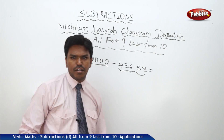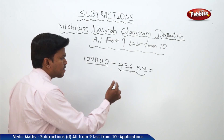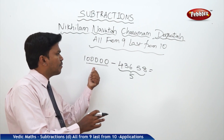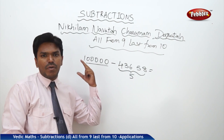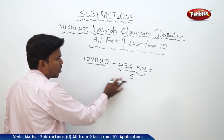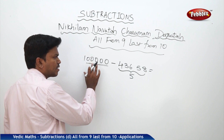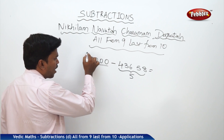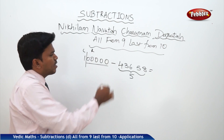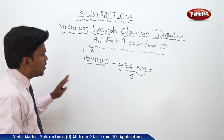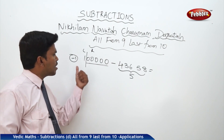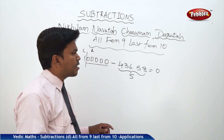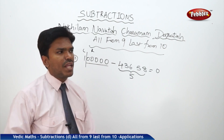Now, how many digits are there in the subtrahend? In this problem there are five digits. Since there are five digits, we will make a partition in the given minuend from the right end — five digits from right: one, two, three, four, five. Now the number is divided into two parts: left and right. To get the left part of the answer, subtract one from the given left part. Here the left part is 1, so 1 minus 1 gives zero.